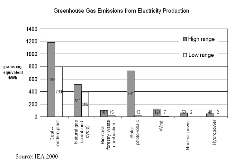A literature review conducted by the Intergovernmental Panel on Climate Change in 2011, of numerous energy sources CO2 emissions per unit of electricity generated, found that the CO2 emission values that fell within the 50th percentile of all total life cycle emissions studies were as follows.